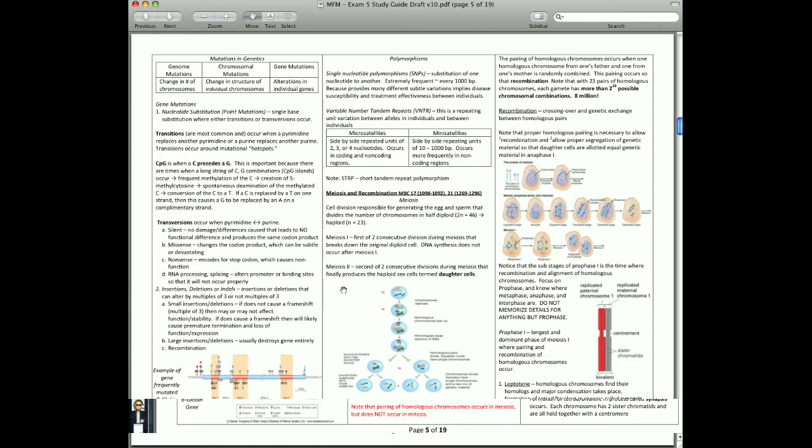You're also going to have recombination and homolog pairing in meiosis I. In meiosis II, this is going to produce the final product, the 23 chromosome haploid, N equals 23 there, daughter cells.